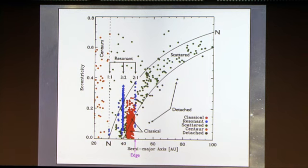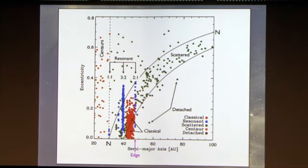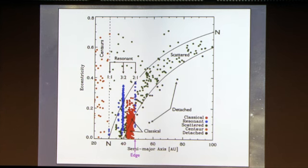Let's talk about the Kuiper Belt. The first object discovered in the Kuiper Belt was Pluto, which was misclassified as a planet. Following the discovery of the second one in 1992, we realized there is a ring of such bodies beyond Neptune — a donut-shaped ring of comets located beyond Neptune at 30 AU. This diagram shows semi-major axis versus orbital eccentricity. The distribution of Kuiper Belt objects in this plane is highly non-random; they're clustered in various places.